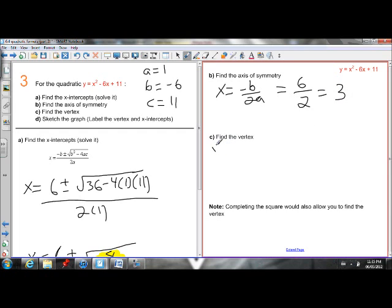So to find the vertex, I know my x-coordinate of the vertex is the axis of symmetry, which is 3. So my y-vertex, I just have to plug in 3 for x. And then it'll tell me the y-coordinate of the vertex.